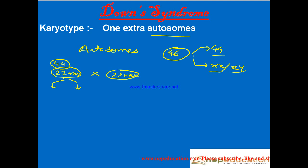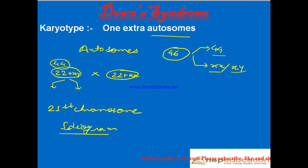Sometimes what happens is the 21st chromosome — chromosome number 21 — is affected. When we take the ideogram, we arrange the chromosomes in descending order.